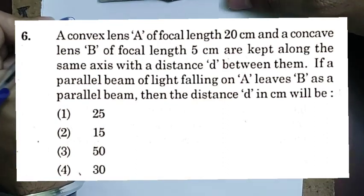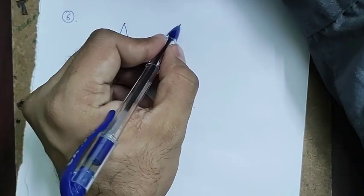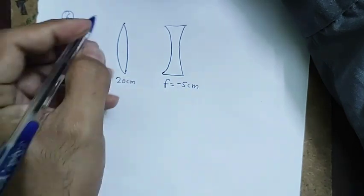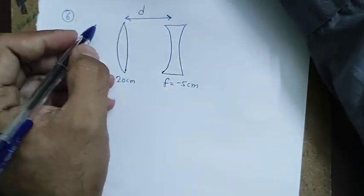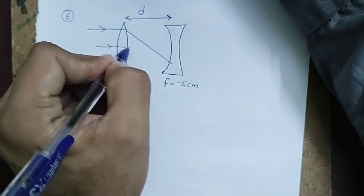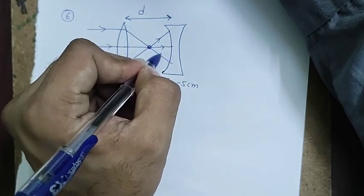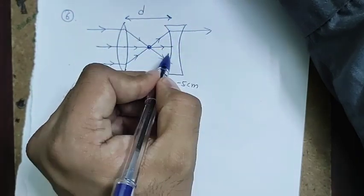Question 6 is from ray optics. A convex lens of focal length 20 cm is followed by a concave lens of focal length −5 cm, separated by distance d. A parallel beam enters the convex lens and also leaves the concave lens as a parallel beam.